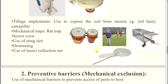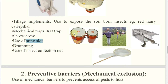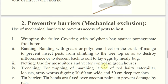Mechanical traps like the red trap, scarecrow, drumming, insect hand net. Scarecrow, drumming — those things can be used against birds, monkeys, fox, jackals — not for insects. Collection net is for insects. Use of preventive barriers — mechanical exclusion.